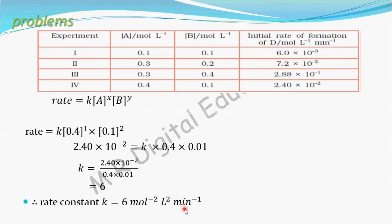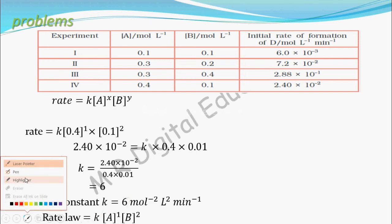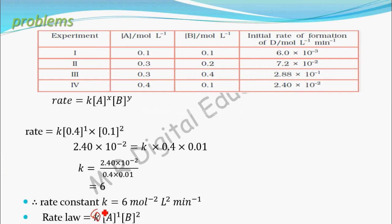Now that we have found k, x, and y, we can write the complete rate law. The rate law is: rate = 6 × [A]¹ × [B]². That is the final answer for this problem.